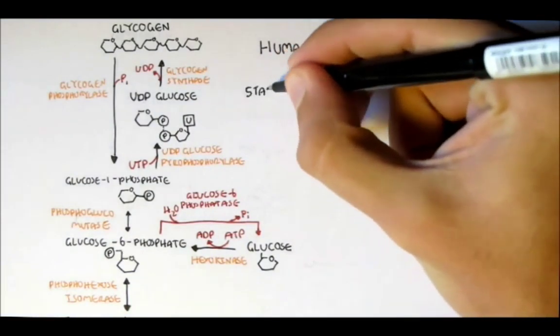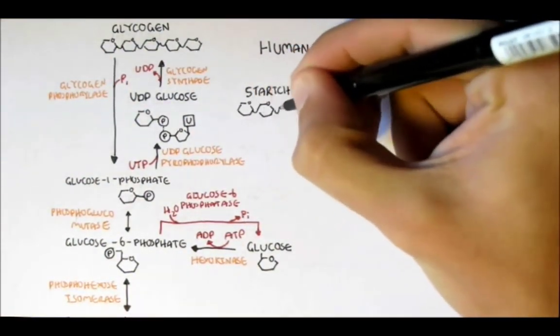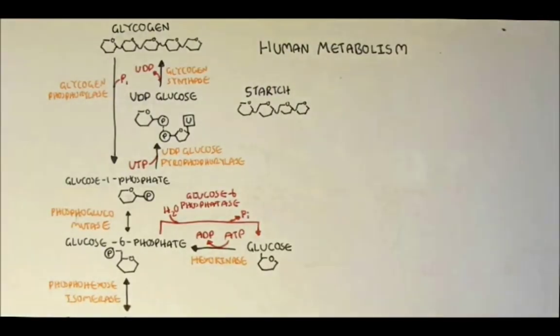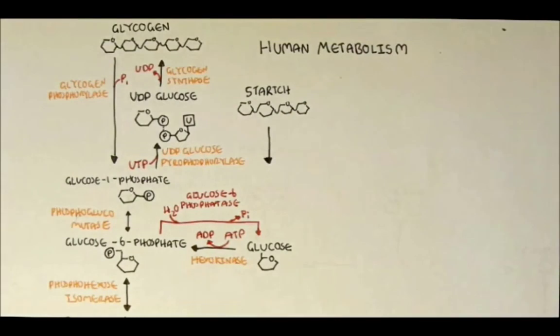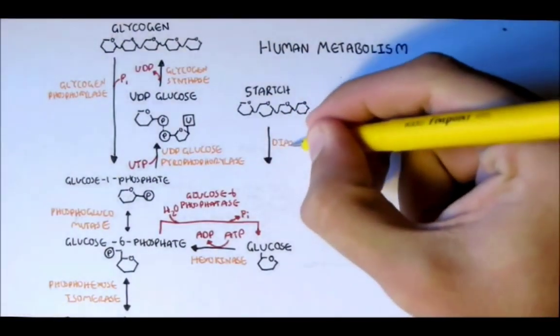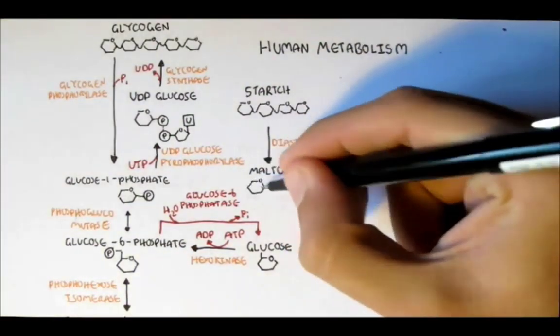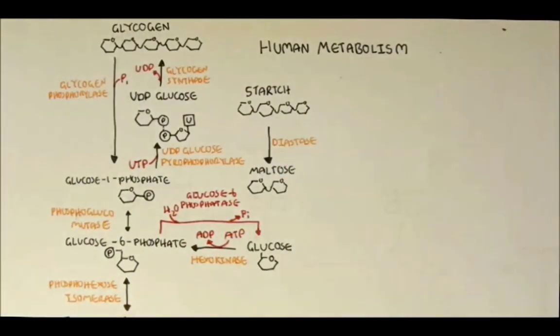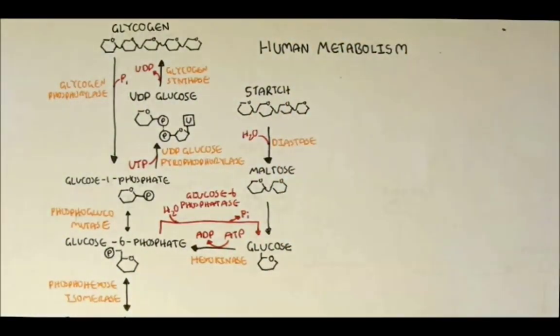So other glucose providers are from starch, which is very similar to glycogen but with different numbers of branches. Now starch with the enzyme diastase will be hydrated to form many maltoses. Maltose is a disaccharide composed of two glucose molecules. Now maltose with the enzyme glucosidase will be hydrated to form glucoses.